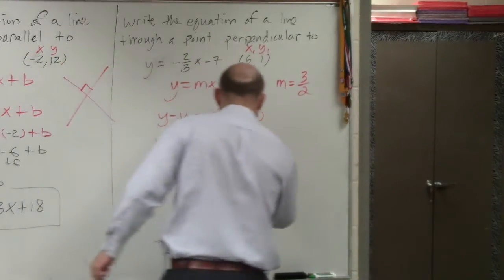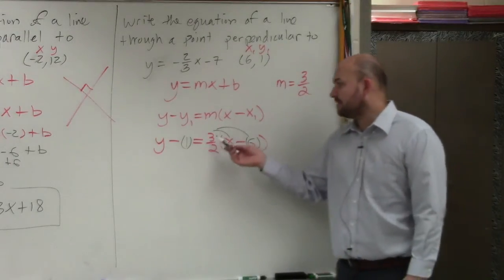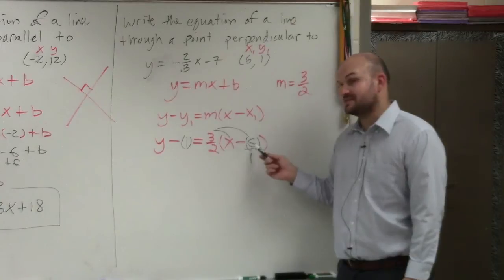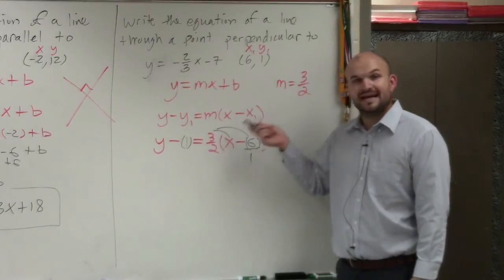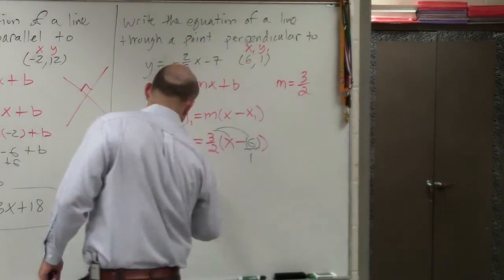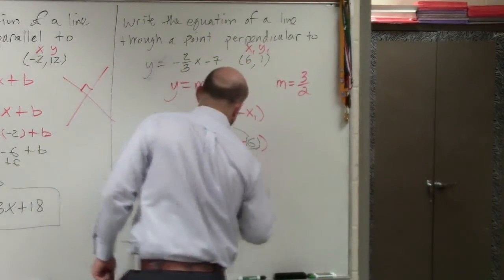Remember, for those of you that forget, to give you a quick tutorial, create your whole number as a fraction, multiply straight across. 3 times 6 is 18, 2 times 1 is 2, 18 over 2 is 9, but it's actually negative 9. So therefore, we have y minus 1 equals 3/2x minus 9.